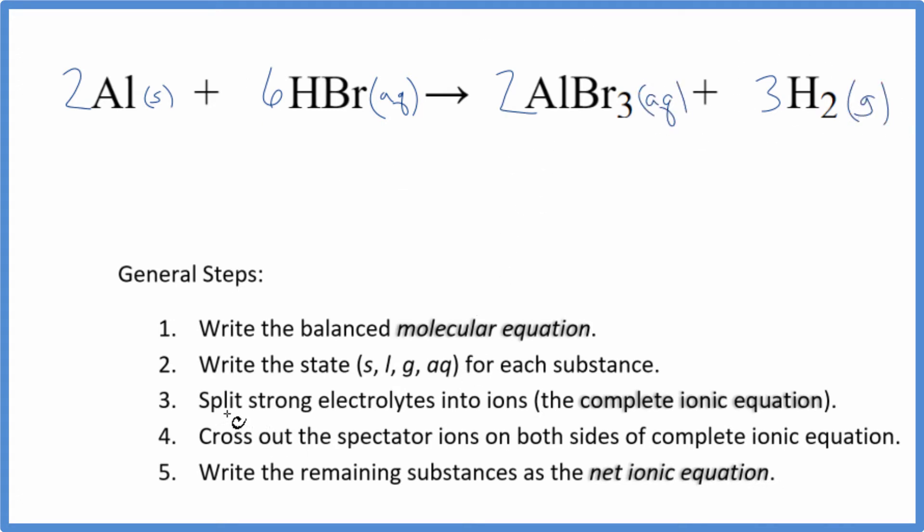So we have the states. Next we split the strong electrolytes into their ions for the complete ionic equation. So aluminum is a solid, it's by itself, we can't split that apart. Just 2Al. I'll write the states later.